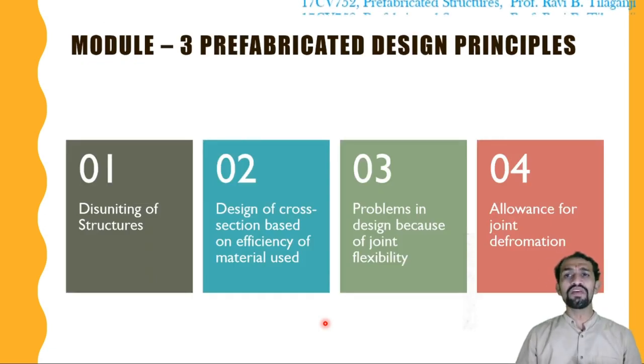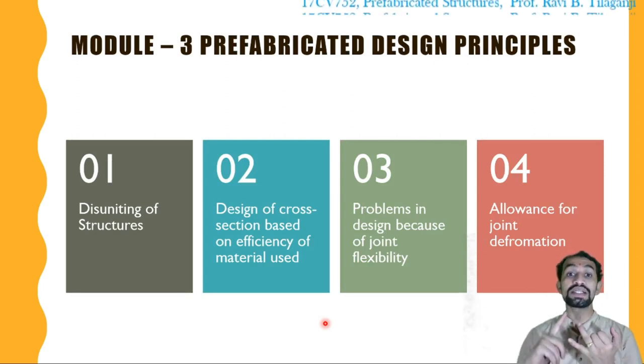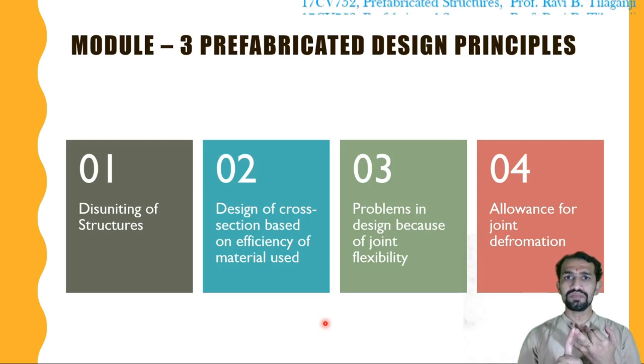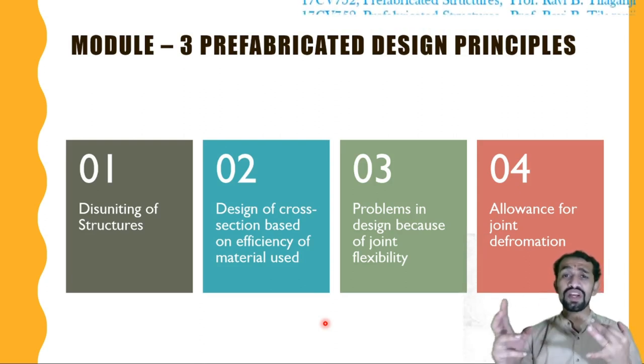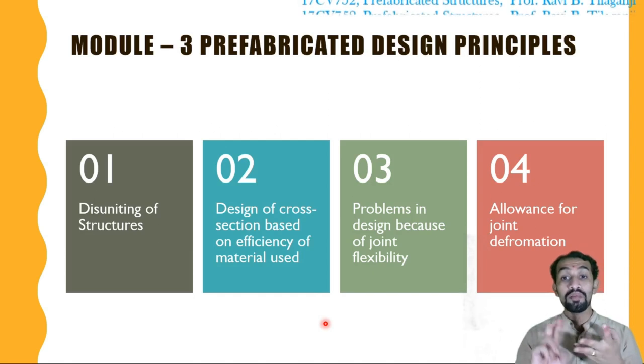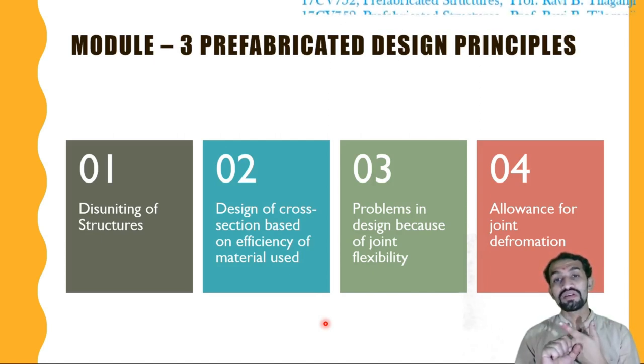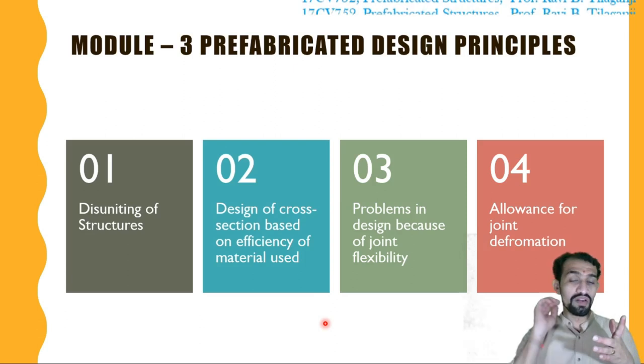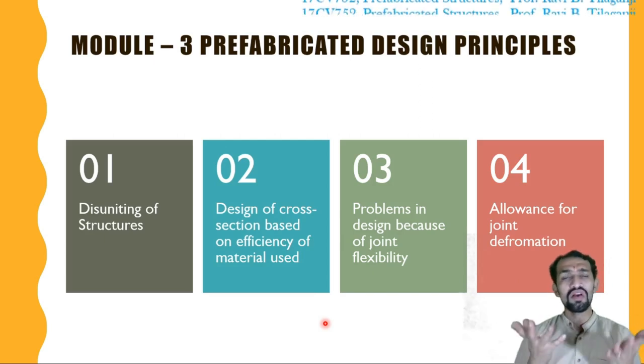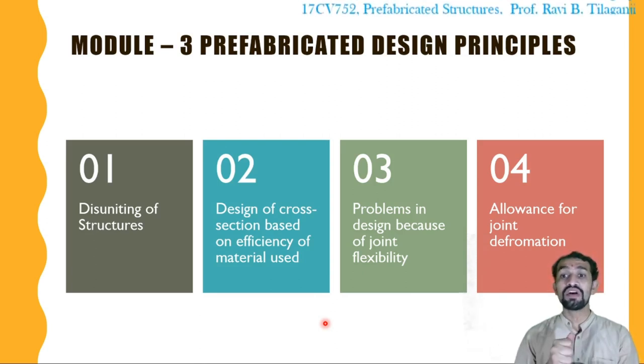Going to give you in detail in module number 3. Coming to module number 3, prefabricated design principles. Disuniting of structures. We are going to disunite design of a cross section based on efficiency of material. Based on the material efficiency. In conventional method, we were just trying to find out the properties of material, not the efficiency. Now the efficiency of material come into token. Problems in the design because of joint flexibility. Joint, how much flexible they are. We are able to see some rigid joints are there. Now whatever the normal constructions are there, they are all rigid. Flexibility is more important nowadays.